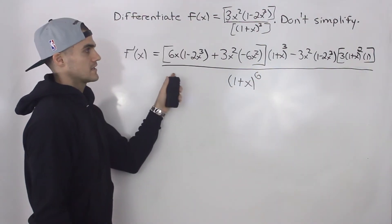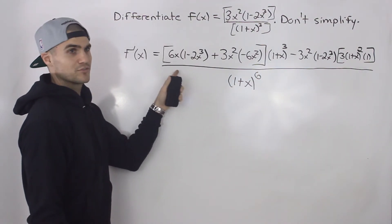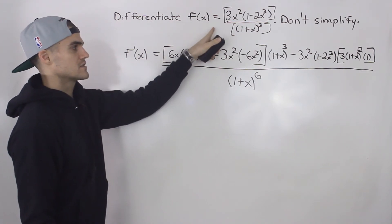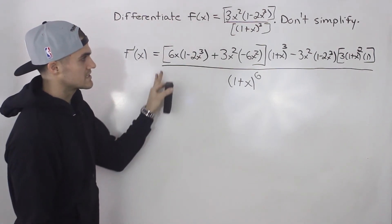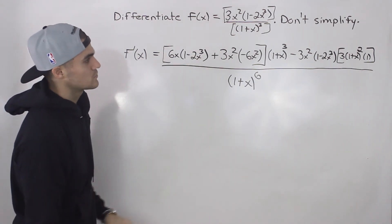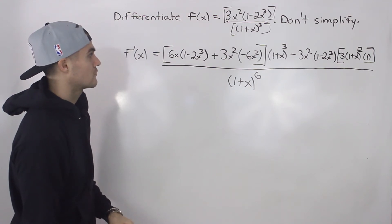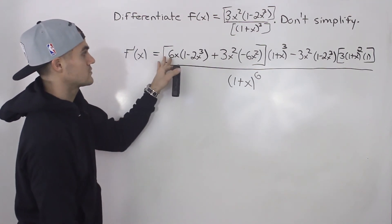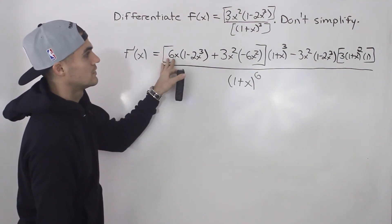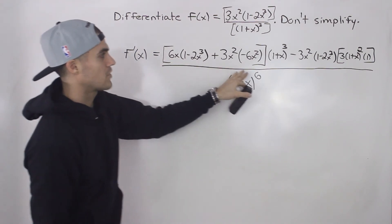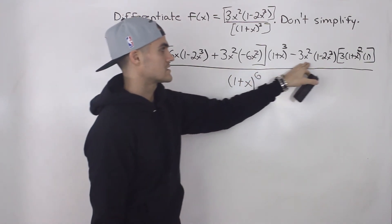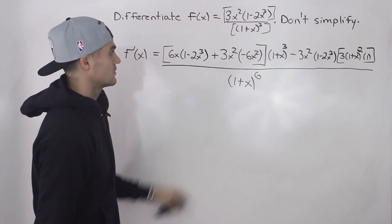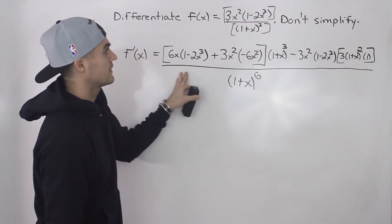And that is it. That is the non-simplified derivative of this function. Notice that simplifying this would take forever — there aren't too many common things we could factor out. We'd have to simplify the bracket and simplify all the rest. So this is the final answer.